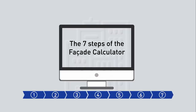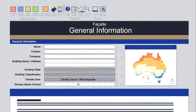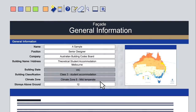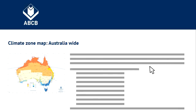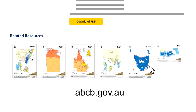Step 1: Enter general information about the building. The calculator should open on the general information page; if not, it is accessible from the first coloured square on the ribbon. On this page, enter details about yourself and the building including classification, climate and stories above ground. Information on climate zones and related resources are available by clicking on the map on this screen or by visiting the ABCB website.